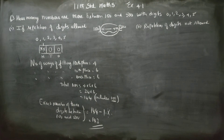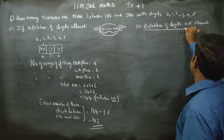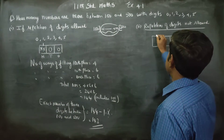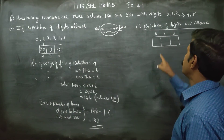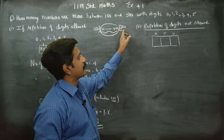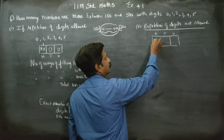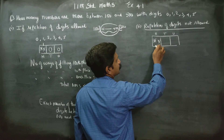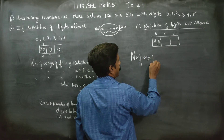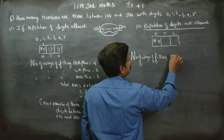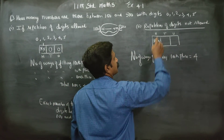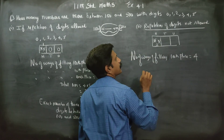Next, we are entering into the case where repetition of digits is not allowed. In the same condition, for a 3-digit number, the 100th place cannot have 0 — it would become a 2-digit number — and cannot have 5, as it would be more than 500. So four numbers — 1, 2, 3, 4 — can be placed in the 100th place. Number of ways of filling the 100th place is 4 ways.